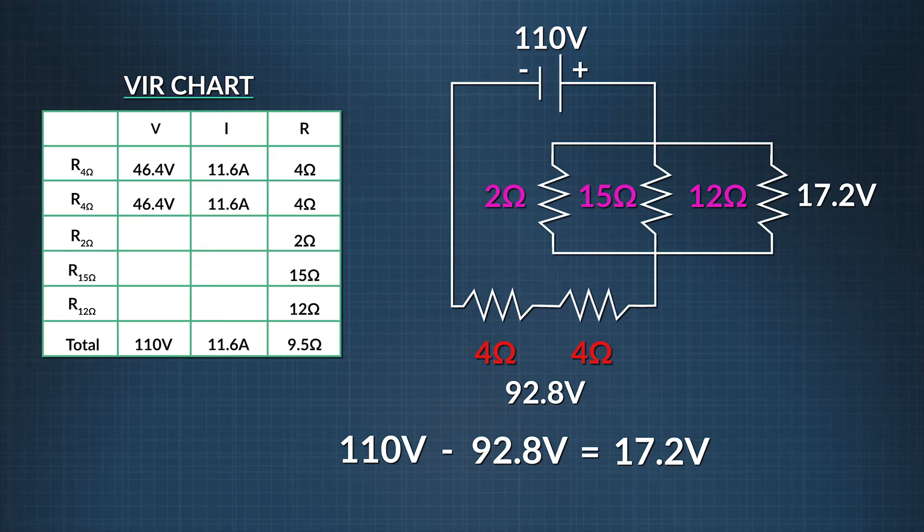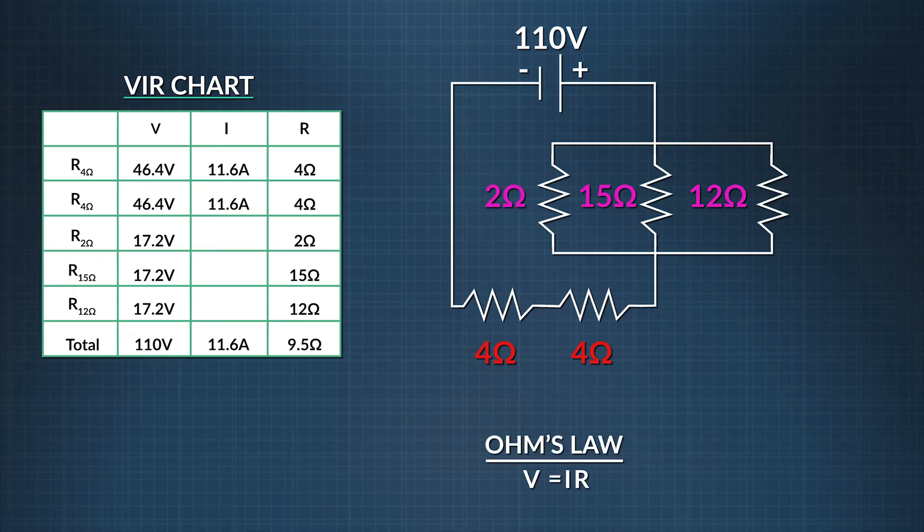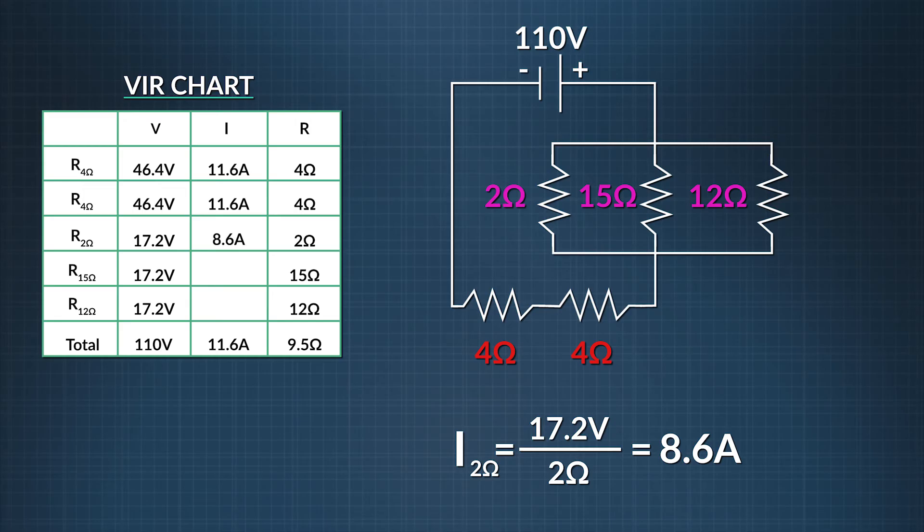For the resistors in parallel, each one must use up the same voltage, 17.2 volts. We can now plug that value into our chart for the voltage across the 2 ohm, 15 ohm, and 12 ohm resistors. We now know two out of three variables in these rows, so we can solve for current again using Ohm's Law. Let's rearrange the Ohm's Law equation again. So current is equal to the voltage divided by resistance. And we find the current for our 2 ohm resistor is 17.2 volts divided by 2 ohms, which is 8.6 amps. For the 15 ohm resistor, it's 17.2 volts divided by 15 ohms, which is 1.2 amps. For the 12 ohm resistor, it's 17.2 volts divided by 12 ohms, or 1.4 amps.